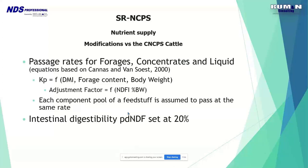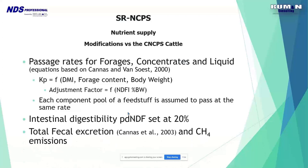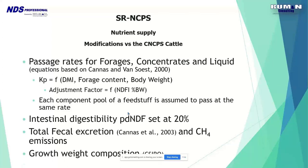Intestinal digestibility is much higher than in the cattle system — set at 20%, compared to 5% for bovines. For those interested in efficiency or greenhouse gas emissions, there is also total fecal excretion and methane emissions estimation. For those interested in growth, there is also an estimation for growth weight composition.